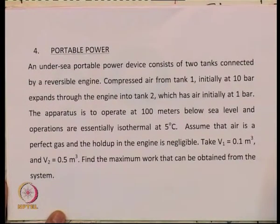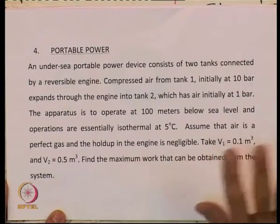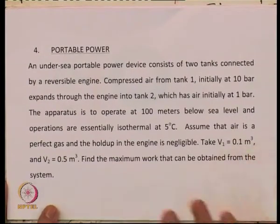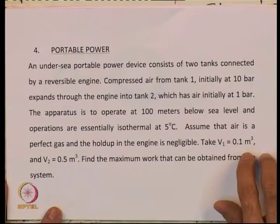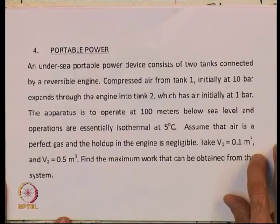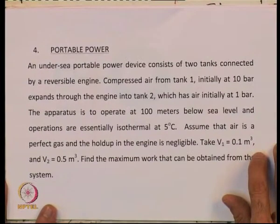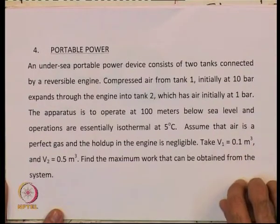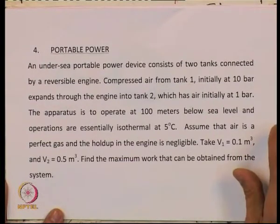In today's session I'd like to discuss the calculation of maximum work that can be obtained from a device. In particular we will discuss an undersea portable device consisting of two tanks connected by a reversible engine. Compressed air from tank 1, initially at 10 bar, expands through the engine into tank 2, which has air initially at 1 bar. The apparatus operates 100 meters below sea level, which means at about a pressure of 10 bar.